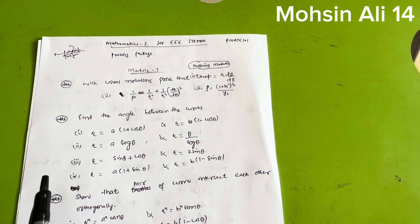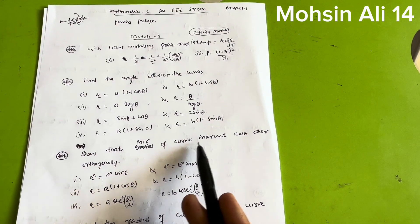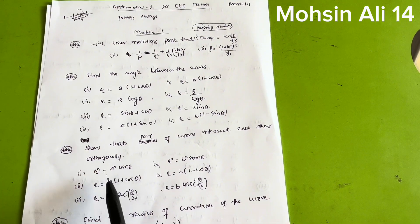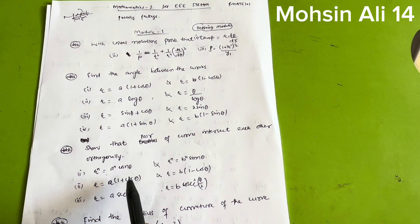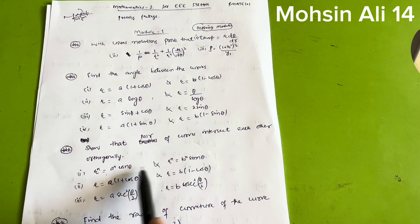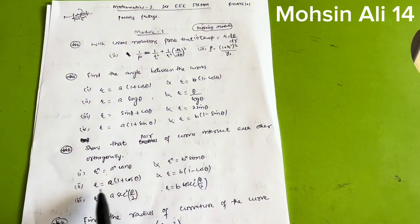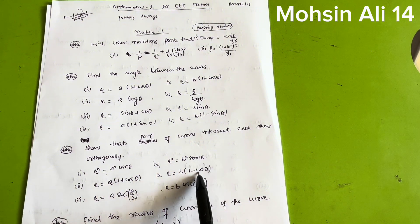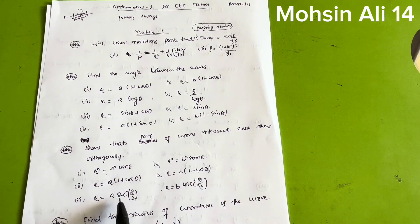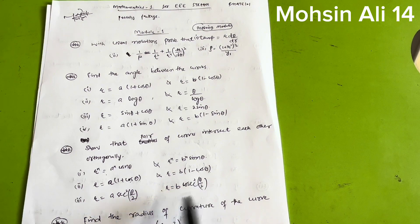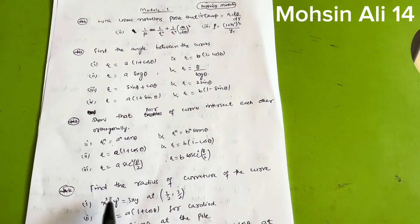Next, show that pairs of curves intersect each other orthogonally. Three pairs of curves which VTU repeatedly asks are: rⁿ = aⁿcos(nθ) and rⁿ = bⁿsin(nθ); r = a(1 + cosθ) and r = b(1 − cosθ); and r = a²·cos(θ/2) and r = b·cos²(θ/2).